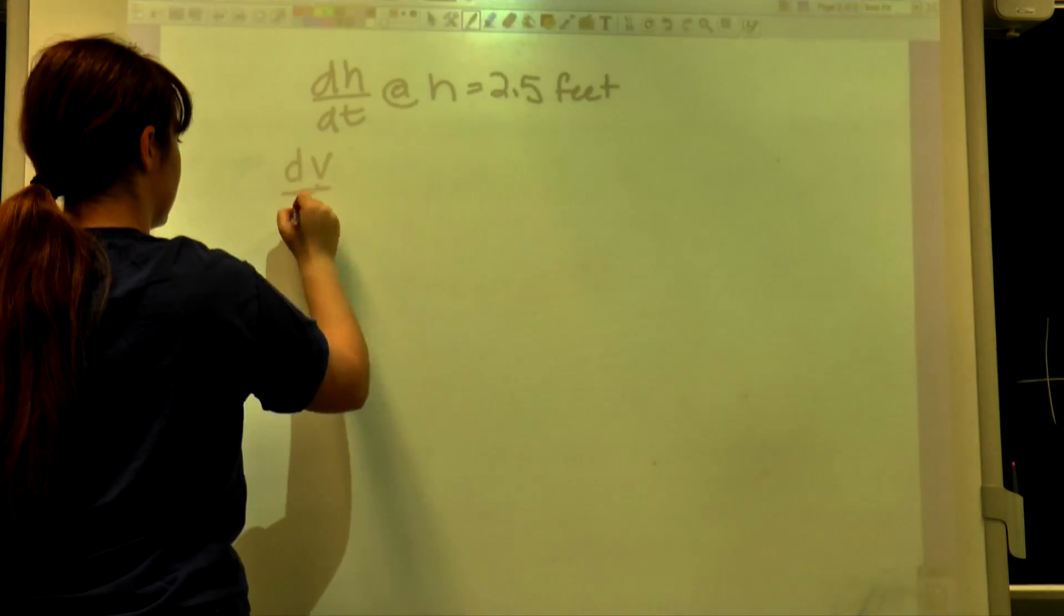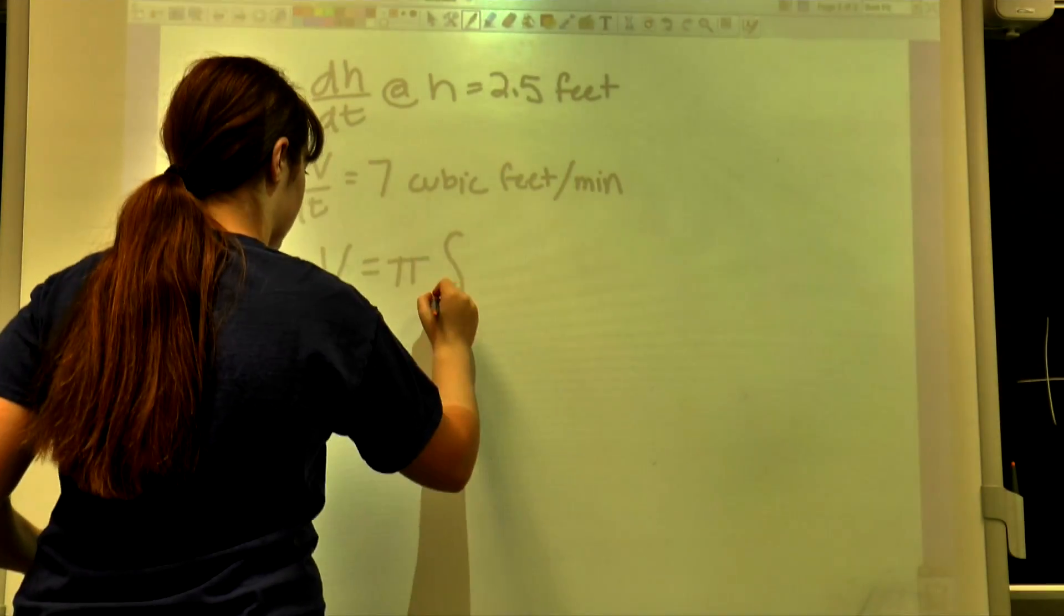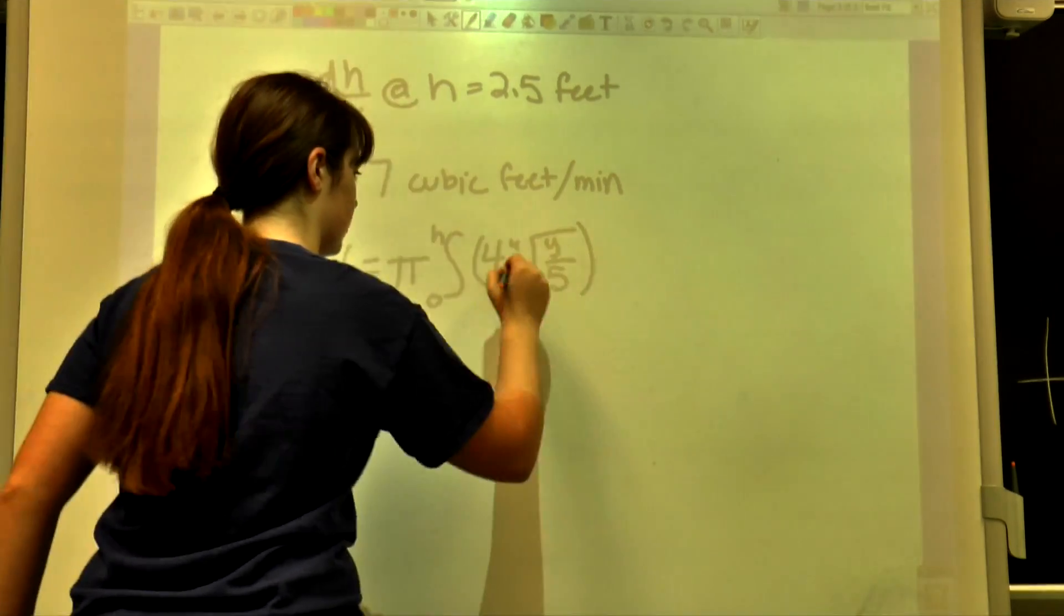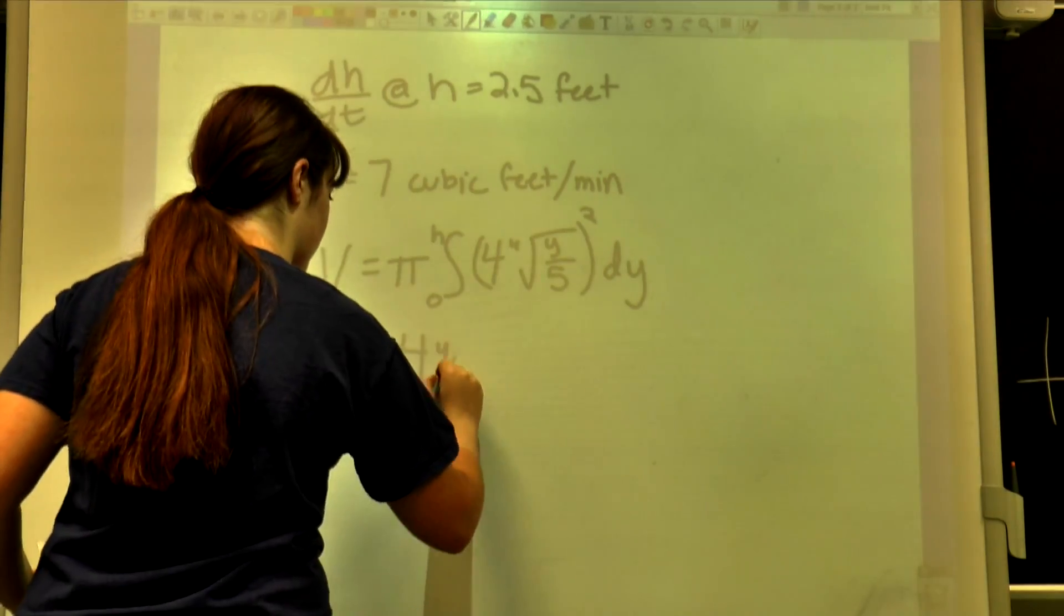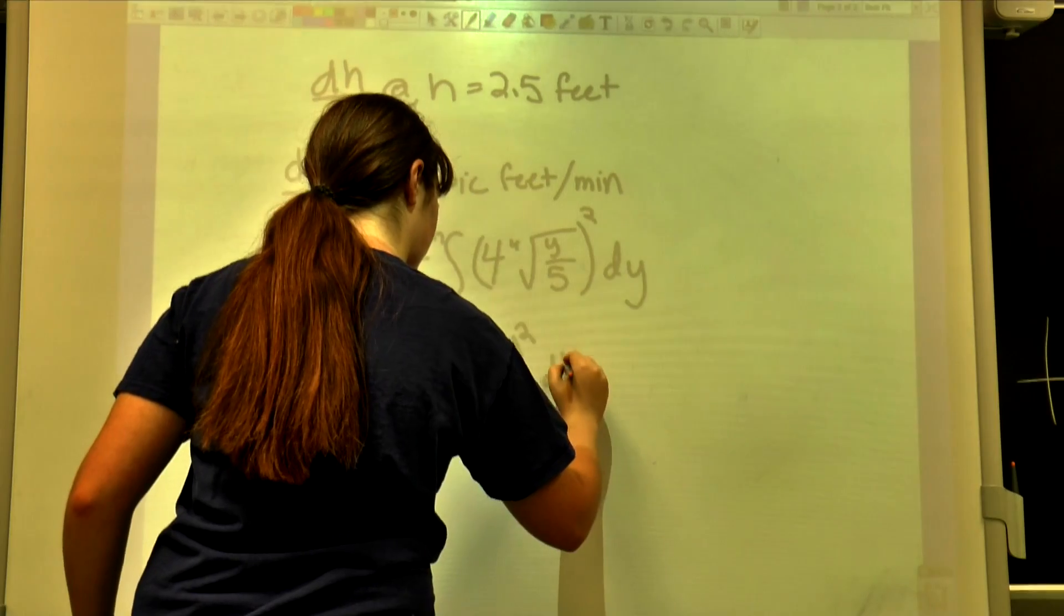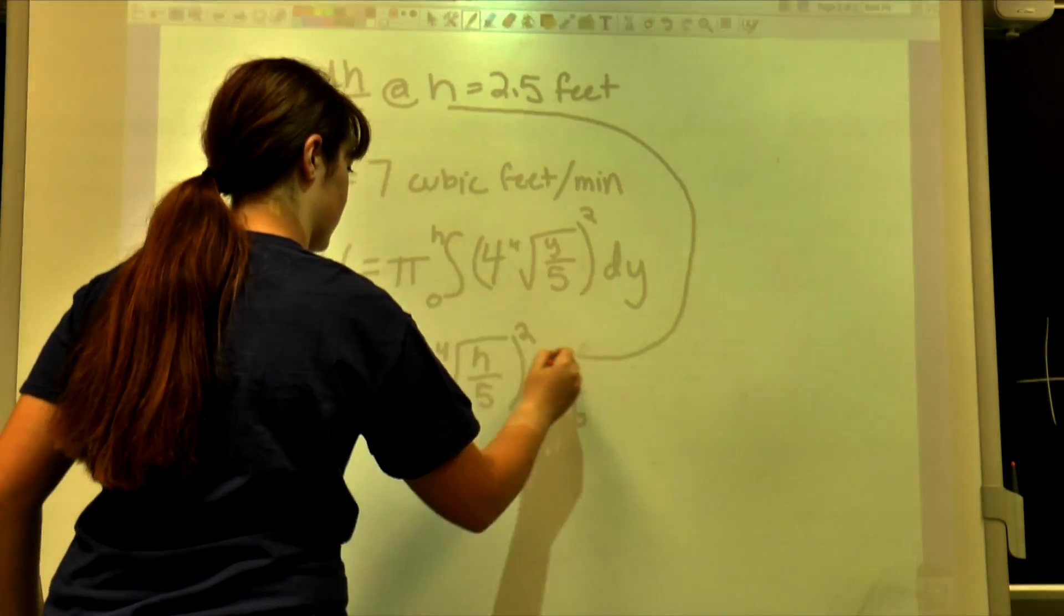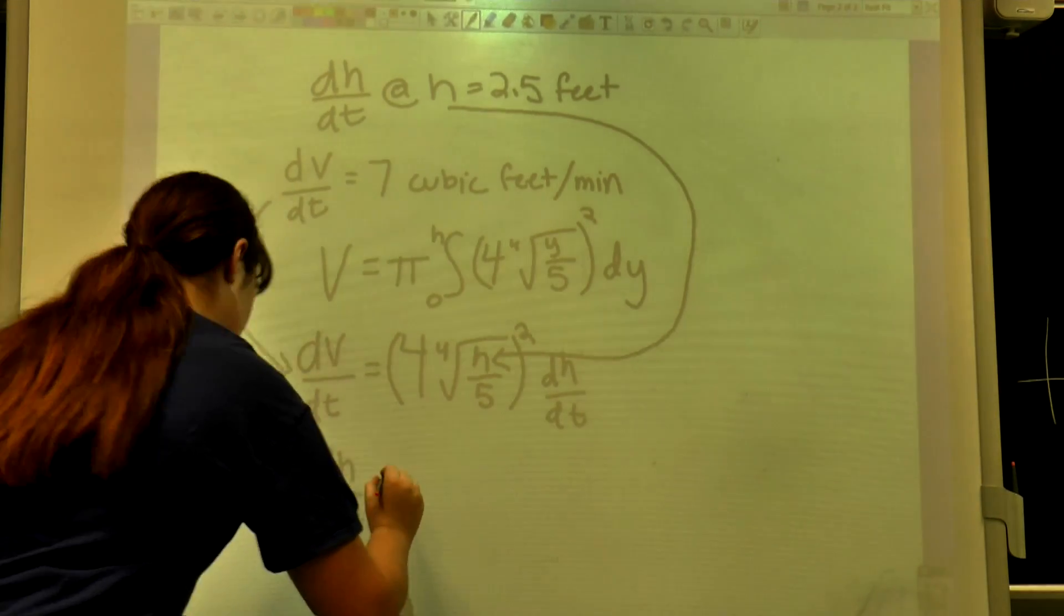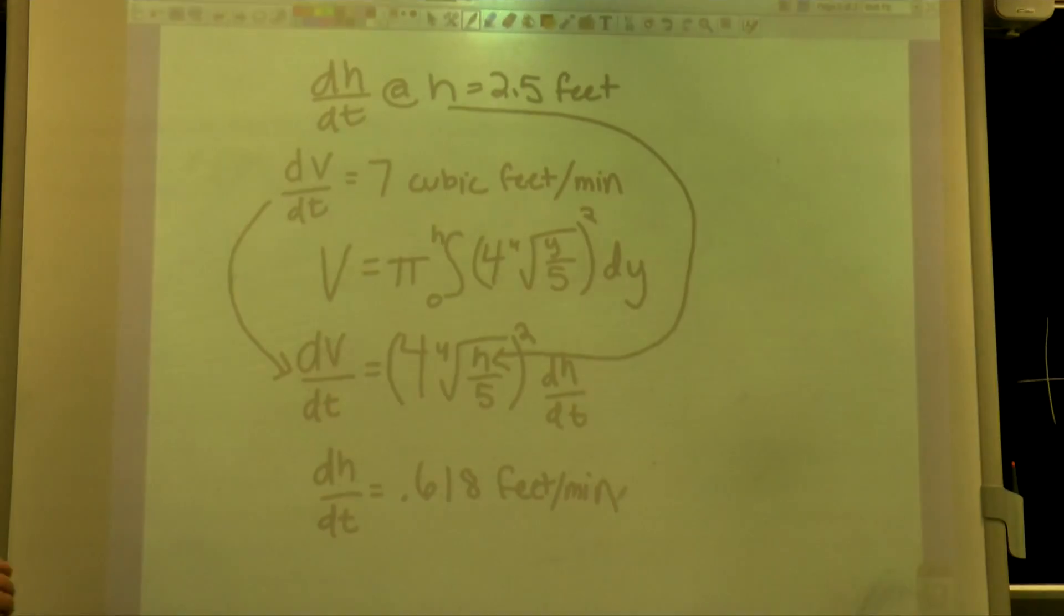Again, I am writing out all of my given information. In the volume integral, we set h as our upper limit so we are able to find the volume at any height. I then take the derivative of the volume function so we can set it equal to volume with respect to time. To take the derivative of the integral, I just plug in h for y and then multiply it by dh dt. I then plug in 7 for dv dt and 2.5 for h to find that the height of the water is changing at a rate of 0.618 feet per minute when the water hits the jets at 2 and a half feet.